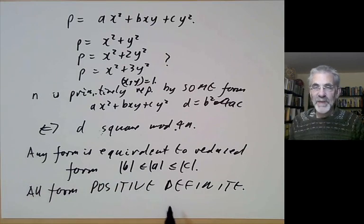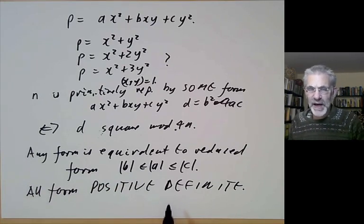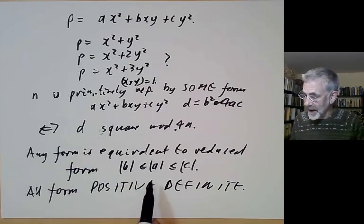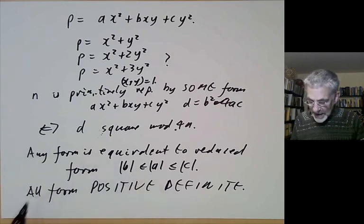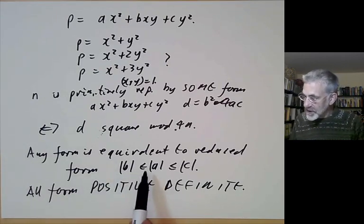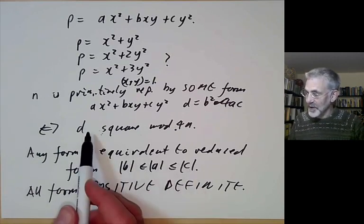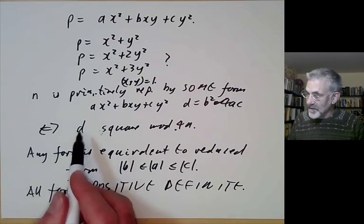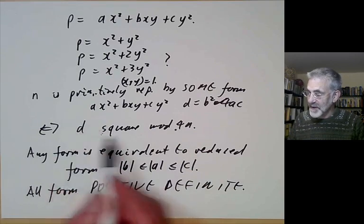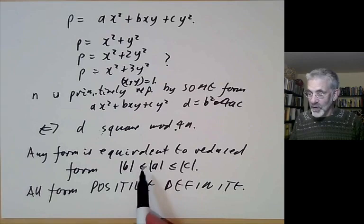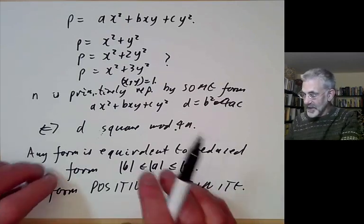The negative definite case is much the same as the positive definite case because you just change sign. The indefinite case is somewhat more complicated; we'll be discussing it in a later lecture. The idea is: if there is a unique reduced form for some discriminant d, then a number n is represented by that reduced form if and only if d is a square mod 4n, since any form is equivalent to a reduced one representing the same numbers.